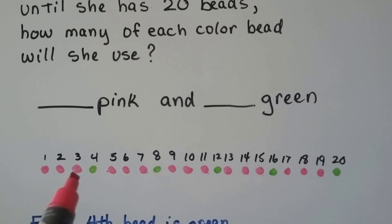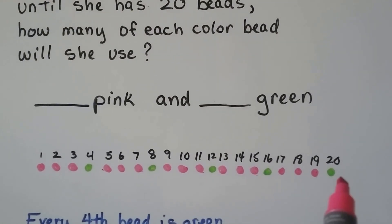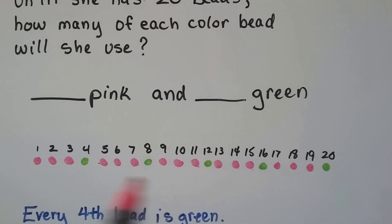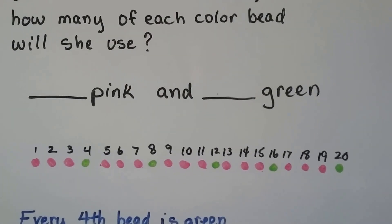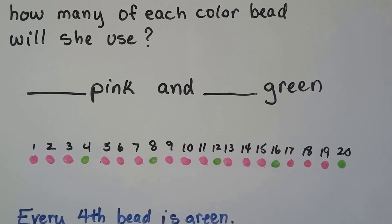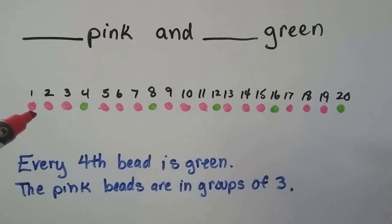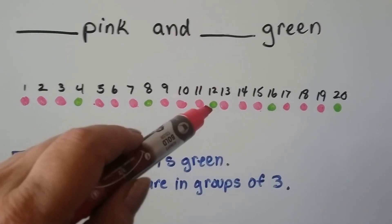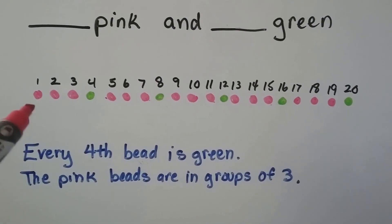We draw a picture of 3 pink, 1 green, 3 pink, 1 green until we have 20 of them. Then we can count how many beads of each color she had. The pattern is 3 pink and 1 green. We can see every 4th bead is green — 1, 2, 3, 4 — repeating. And the pink beads are in groups of 3.